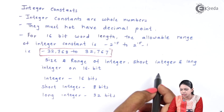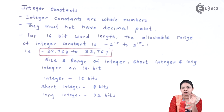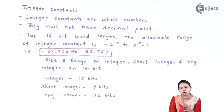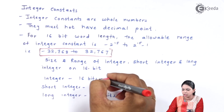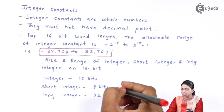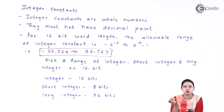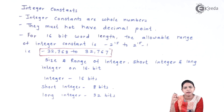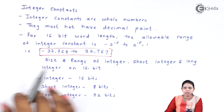The size and range of integer constant varies. There are three categories: short integer, integer, and long integer. A regular integer uses 16 bits, a short integer uses 8 bits, and a long integer uses 32 bits. If your number is too large to be handled by a regular integer, we make use of a long integer, which can handle up to 32 bits.